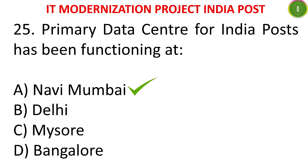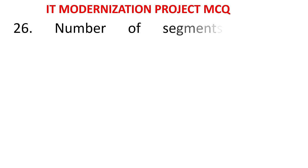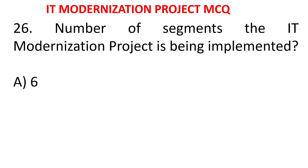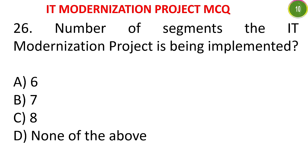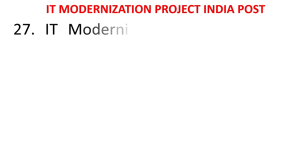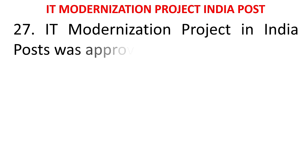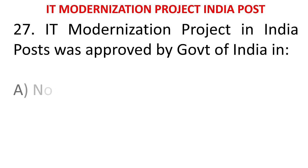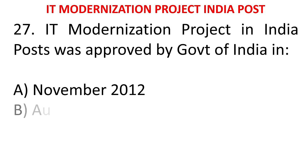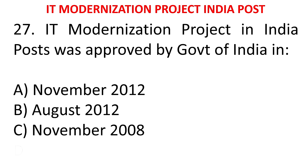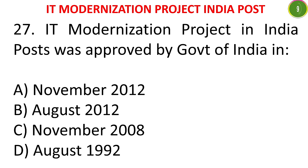MCQ 24: The number of segments in which the IT modernization project is being implemented is - six, seven, eight, or none of these. The answer is eight. MCQ 25: IT modernization project in India Post was approved by the Government of India in - November 2012, August 2012, November 2008, or August 1992. The answer is November 2012.